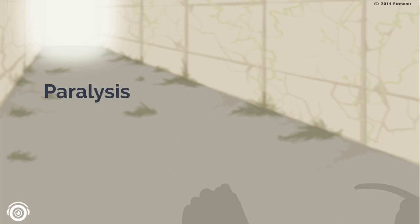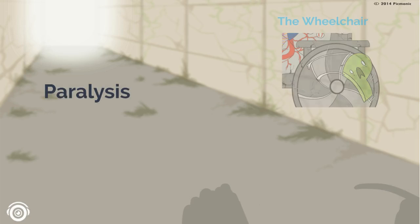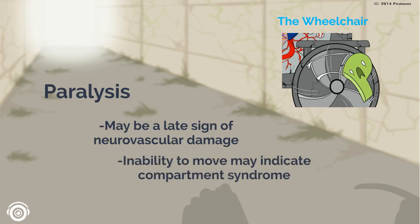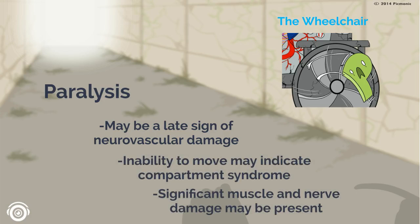Paralysis: partial or full loss of sensation or function may be a late sign of neurovascular damage. The complete inability to move the limb distal to the injury may indicate compartment syndrome, and significant muscle and nerve damage may be present. Paralysis is represented by the wheelchair.